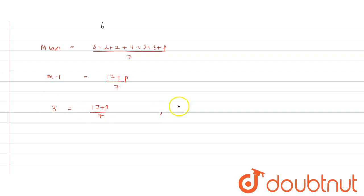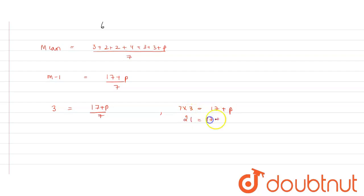So 7 into 3 equals 17 plus p. So 21 equals 17 plus p. Therefore the value of p is 21 minus 17, that is 4.